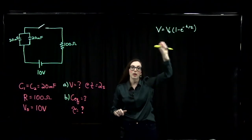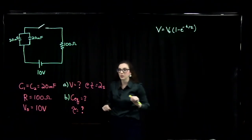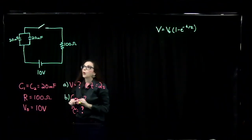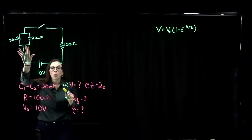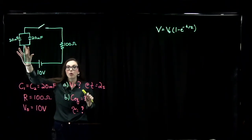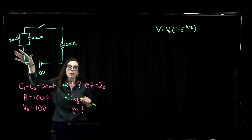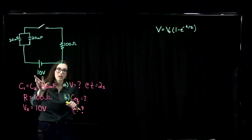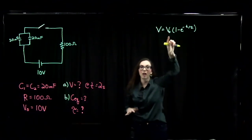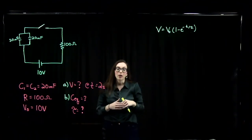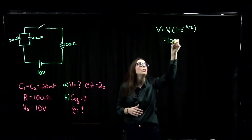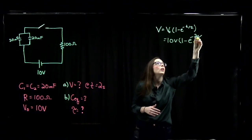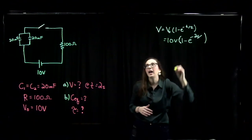Here is our equation for the potential across a capacitor while charging in an RC circuit. We need to determine the maximum potential V₀ that we could get across these plates. Since the capacitors are in parallel, they both have the same potential across their plates, and the maximum potential either could reach equals the potential supplied by our battery — which is 10 volts. So V₀ equals 10 volts, and we have: V equals 10 volts times one minus e to the minus t over tau.